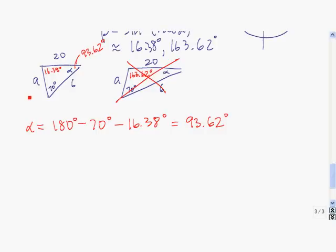The last thing that we have to find is the value of a. So a divided by the sine of 93.62 equals, we'll use 20 divided by the sine of 70. Remember we're taking the side and the angle opposite that side all the time.